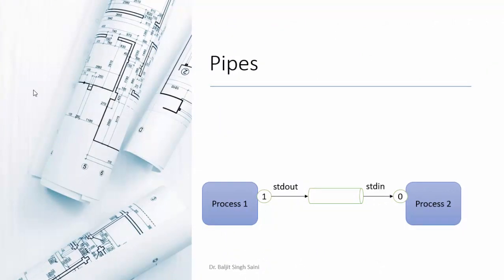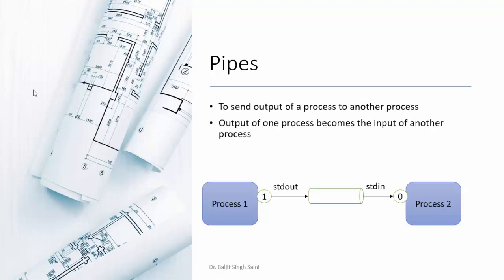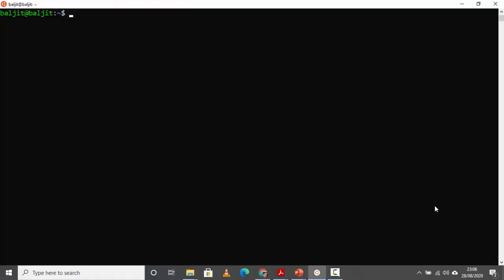Now we are going to learn about pipes. A pipe redirects the output of one process to act as the input of another process. Nothing gets displayed on the terminal and nothing gets stored in a file — the output of one process becomes the input of another. To use it, you need the pipe symbol, which is the key above Enter — use Shift and that key.